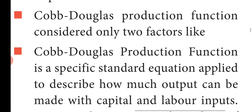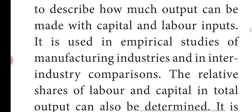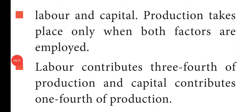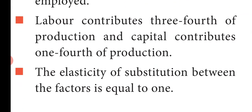The Cobb-Douglas production function has two factors: labour and capital. In the manufacturing industry, labour contributes three-fourths of production and capital contributes one-fourth of production. The elasticity of substitution between the factors is equal to 1, indicating constant return to scale in the Cobb-Douglas production function.